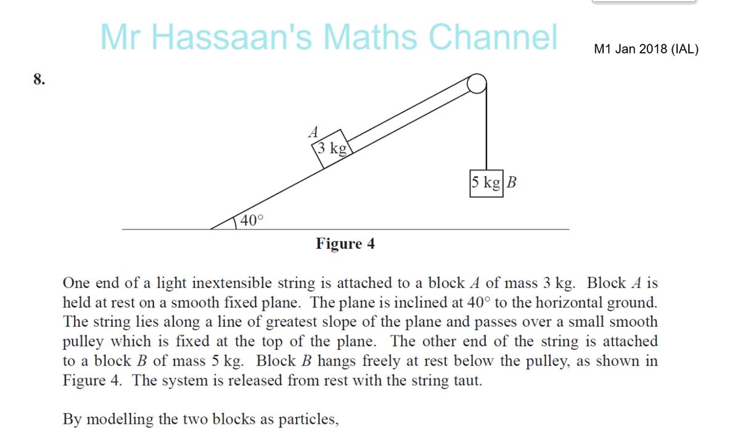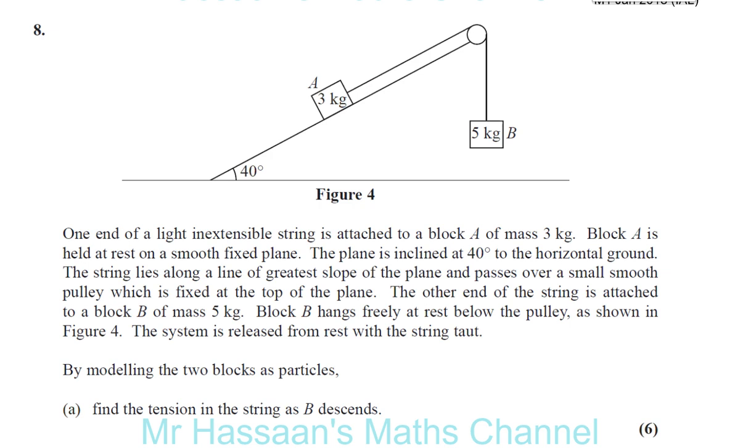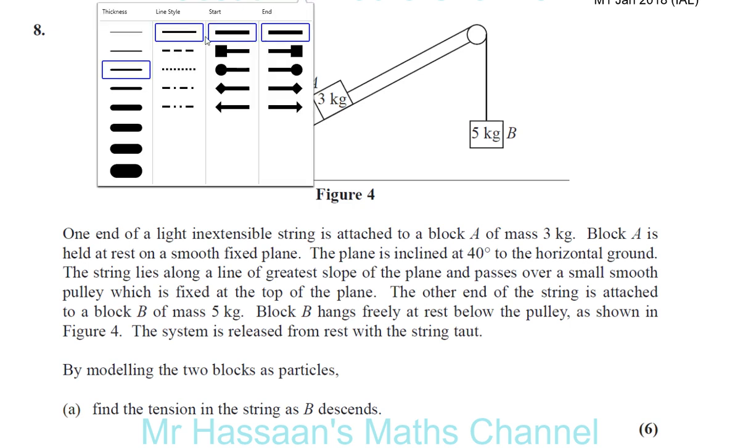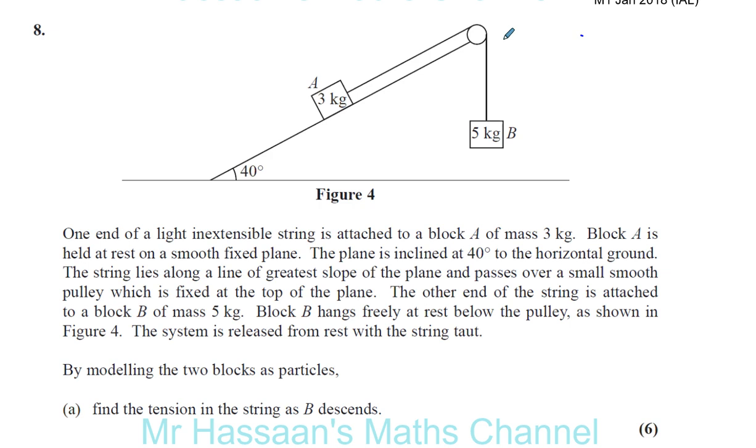M1 January 2018 IAL question number 8. A question about connected particles and pulleys and such. One end of a light and extensible string is attached to a block A of mass 3 kilograms. Block A is held at rest on a smooth fixed plane. No friction involved there.